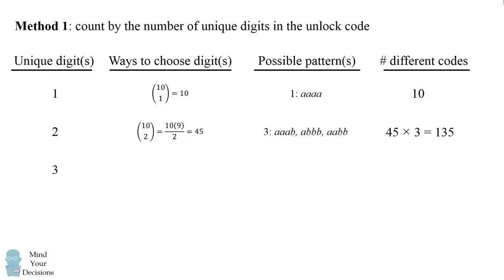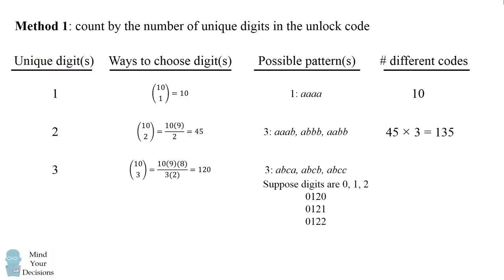We could also have three unique digits in the unlock code. There will be 10 choose 3 ways to choose these three digits. There are three possible patterns because each of the digits could be repeated. If we had the digits 0, 1, and 2, we could have digit 0 repeated, digit 1 repeated, or digit 2 repeated. So we take 120 multiplied by three possible patterns to get 360.